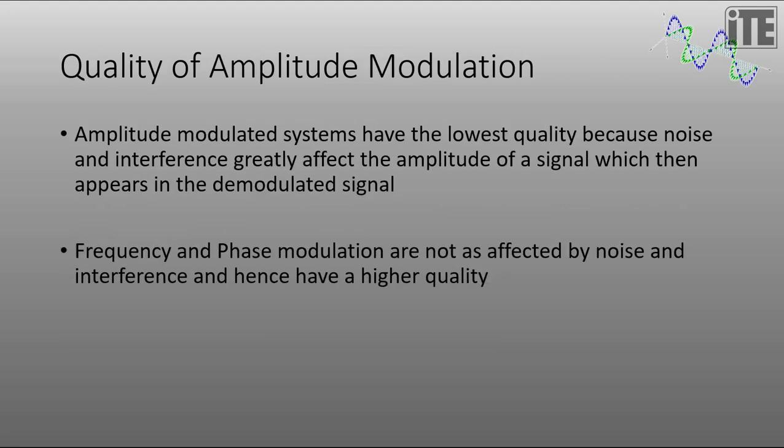Now one of the problems with amplitude modulation is the quality. They have the lowest quality of all modulation systems. And that's because noise and interference which come into the transmission and reception process greatly affect the amplitude of a signal. And if we add noise to an amplitude modulated signal, then all of that noise is replicated in the demodulated signal. So you can appreciate any noise that affects the amplitude of an amplitude modulated signal. The envelope detector is simply going to think that that's the message signal and it's going to reproduce the noise at the output.